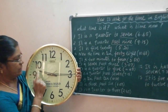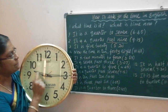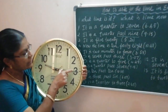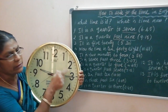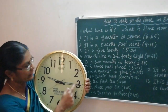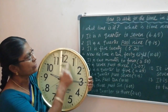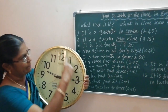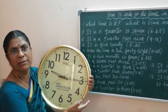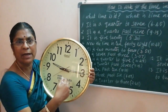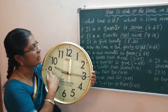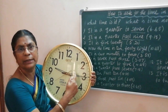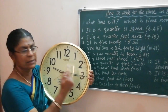It is nine. Nine is past. After quarter — 'past' means nine is over. So, it is a quarter past nine. That means the time is 9:15.